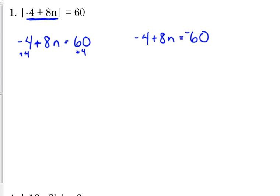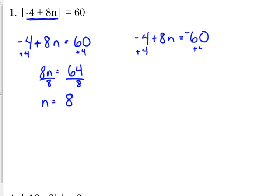Usually one solution is a whole number and the other ends up being a fraction — but not always. For the first equation, add four to both sides and divide by eight: 64 divided by eight is eight. For the other one, when we add four to both sides, eight n equals negative 56. Divide by eight, and that actually ends up being a whole number as well: negative seven. Sometimes we end up with two whole numbers; a lot of times we end up with a fraction.